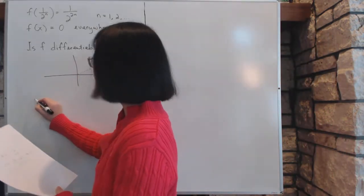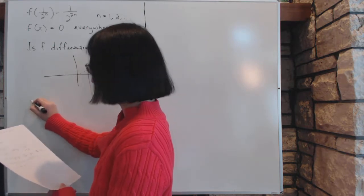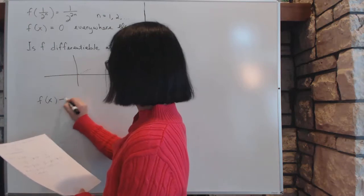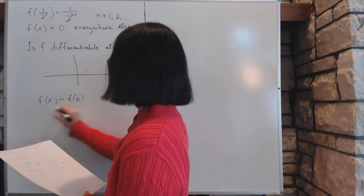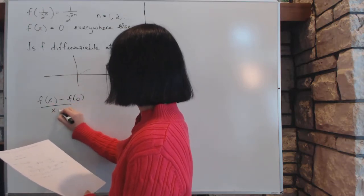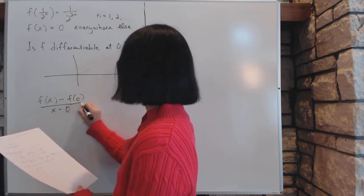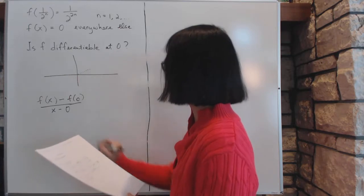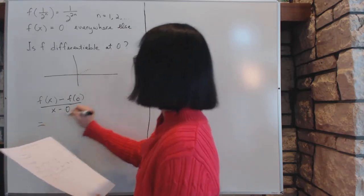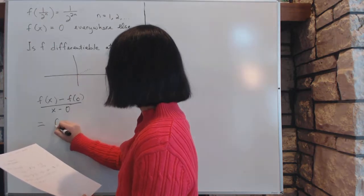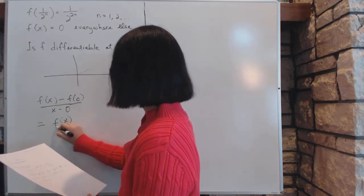Go by the original definition of differentiation. We consider this fraction: f(x) minus f(0) divided by x minus 0. This is the definition of f'(0). Since f(0) equals 0, that simply equals f(x) over x.